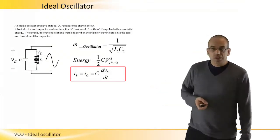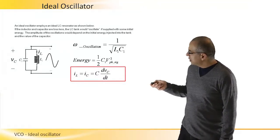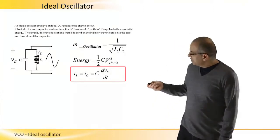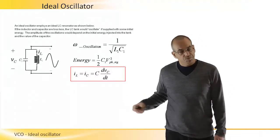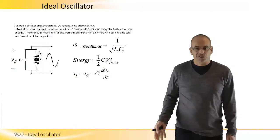And it will be C times the voltage differential with time, so it's C dVc/dt, and we will use it later on when we further analyze physical oscillators.